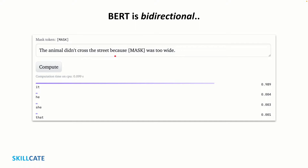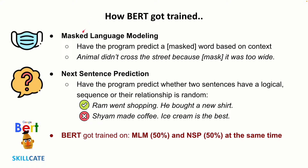Using this bidirectional capability, BERT is pre-trained on two different but related NLP tasks: masked language modeling and next sentence prediction. The objective of masked language model, or MLM, training is to hide a word in a sentence and then have the program predict what word has been hidden or masked based on the hidden word's context. The objective of next sentence prediction training is to have the program predict whether two given sentences have a logical and sequential connection or whether the relationship is simply random. BERT is trained on both MLM and NSP in a 50-50 ratio at the same time.